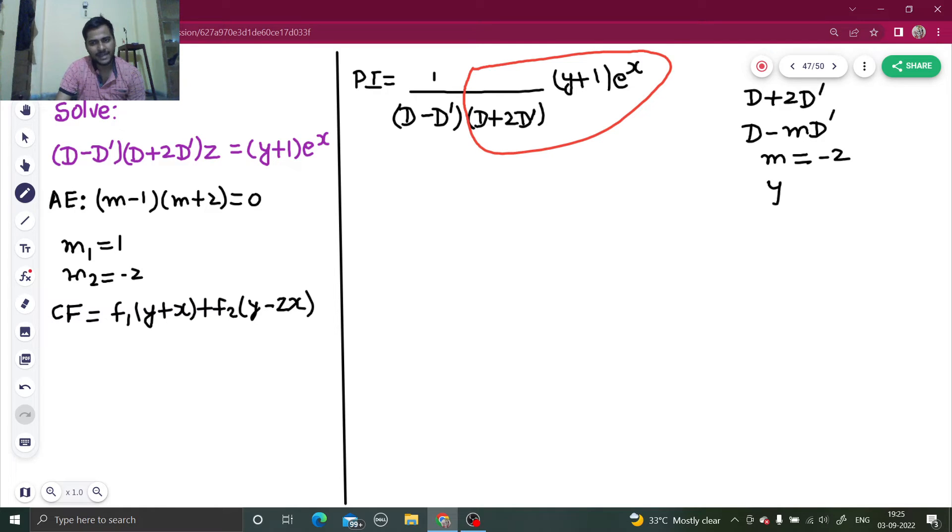Using this, you write y in terms of c minus mx. So y will be c plus 2x. Use this y here. Write first factor as it is. Second factor, as I told, we will convert to integral. Now, y plus 1, in place of y write c plus 2x plus 1, e^x dx.